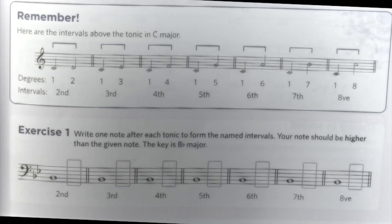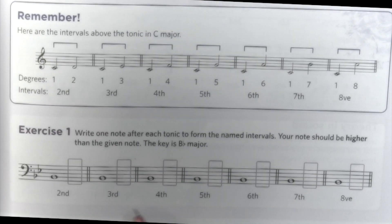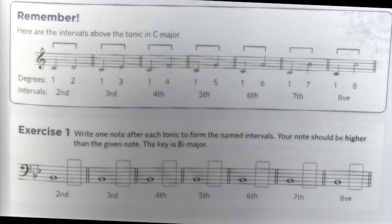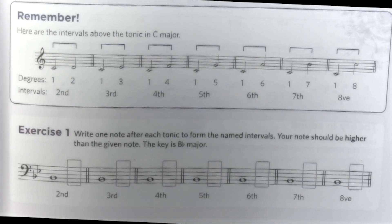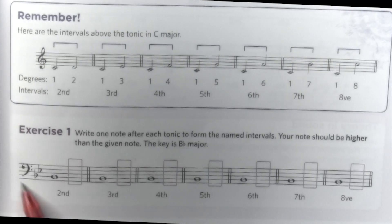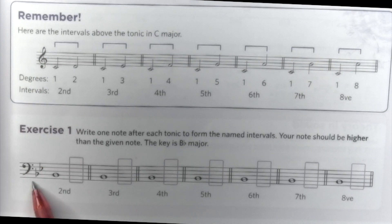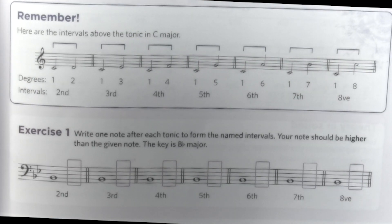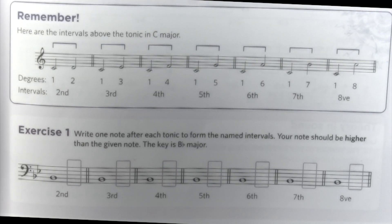This Chapter 7 relates to intervals. Let's go straight on to Exercise 1. We need to write the notes using the number of intervals indicated. As we have the key signature here, we don't need to worry about the accidentals, so we just count the notes.